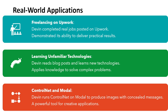Now let's see some real-world applications it has already done. Freelancing on Upwork: Devin has completed real jobs posted on Upwork and demonstrated its ability to deliver practical results — it took a project and delivered. Then learning unfamiliar technologies: it learns on its own, reads blog posts, learns new technologies — more or less like a human. It applies that knowledge to solve complex problems, searching the internet to find what is missing and then developing solutions.